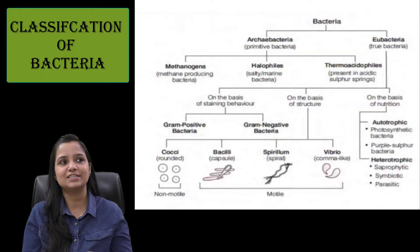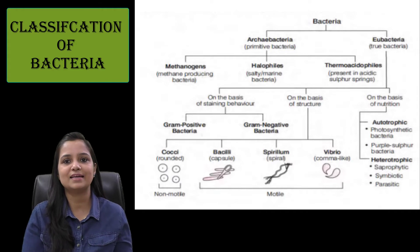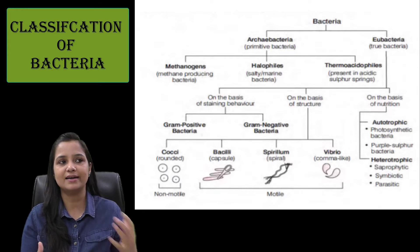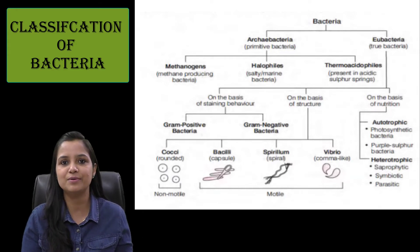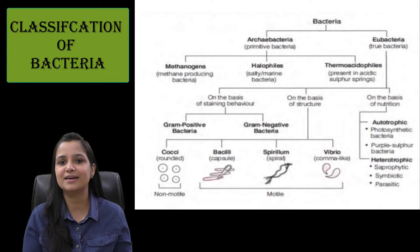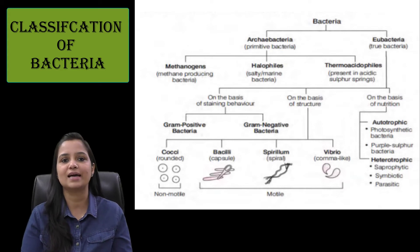Bacteria is divided into archibacteria and eubacteria. Archibacteria means primitive bacteria and eubacteria means true bacteria.